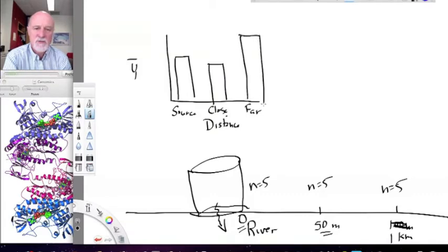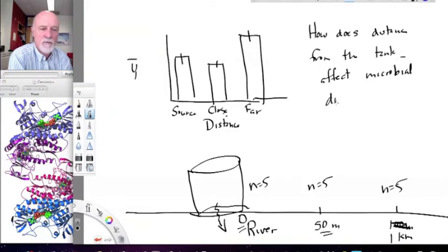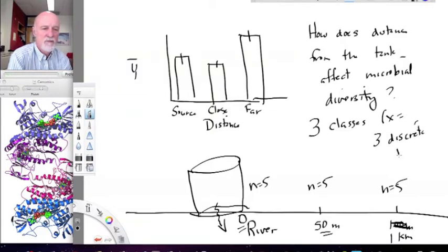Now, so we might get our diversity means based upon, let's say, n equals five samples at each distance. Okay? We can imagine we'll get three means and three standard errors. And our question here that we're asking, actually, every statistical analysis we're doing should be answering a question. What's our question here? How does distance from the tank affect microbial diversity? But distance, in this case, is just sort of three classes of distances.